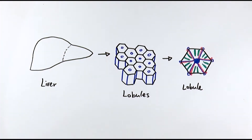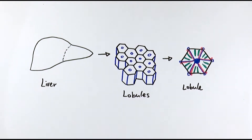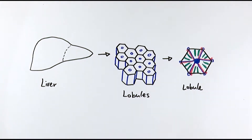In today's video we'll be looking at the structure of the liver and its function. It's really important to understand first of all how it is organised. The liver is actually the second largest organ in the body — the first one is actually the skin. And the liver is so big because it serves so many different functions, from digestion to blood glucose level regulation to detoxification.